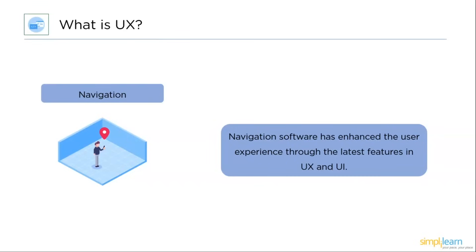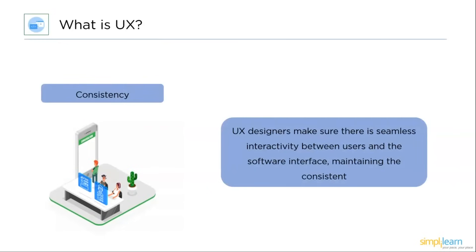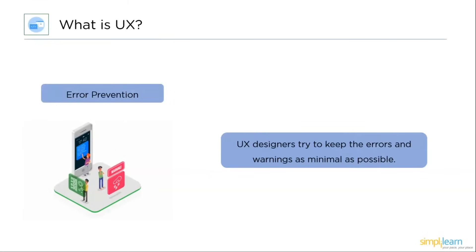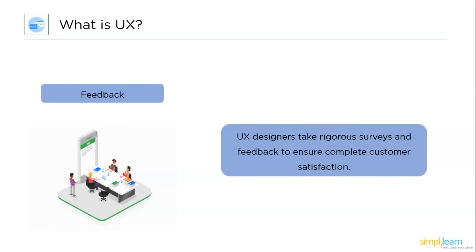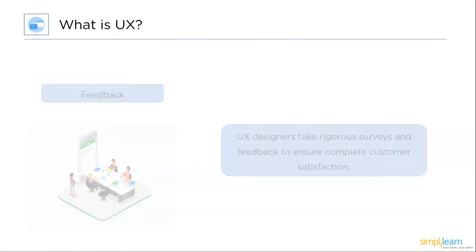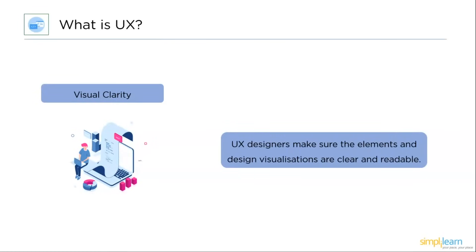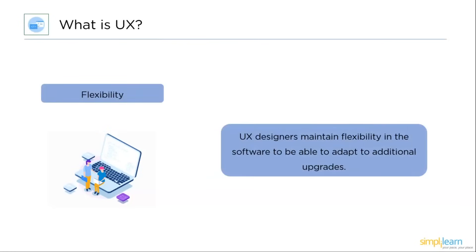Usability involves several elements: navigation — creating and implementing ways for users to navigate through a website or app; consistency — a usable design always provides a consistent experience; error prevention — alerting users when they are making an error to help them complete tasks without mistakes; feedback — used to engage, explain, and improve user satisfaction; visual clarity — how effectively visual design prioritizes and conveys information; and flexibility — knowing your customers and giving flexibility for different customer intents.